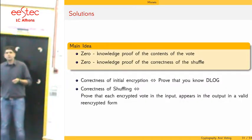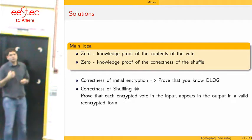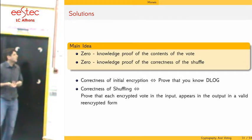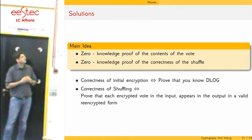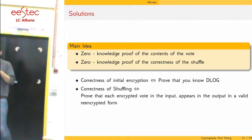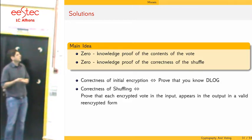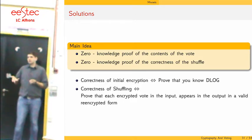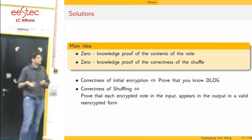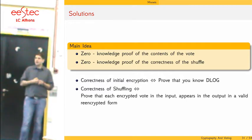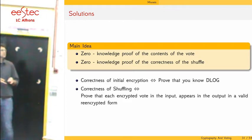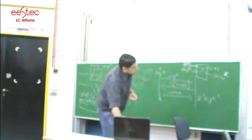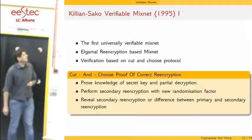All these protocols have one thing in common: we use zero knowledge proofs to prove the contents of the ballot and to prove the correctness of what each mix server did. To prove that the initial encryption is correct, we must prove knowledge of the discrete logarithm. To prove correctness of the shuffle, we must prove that each input appears in the output in a valid re-encrypted form.